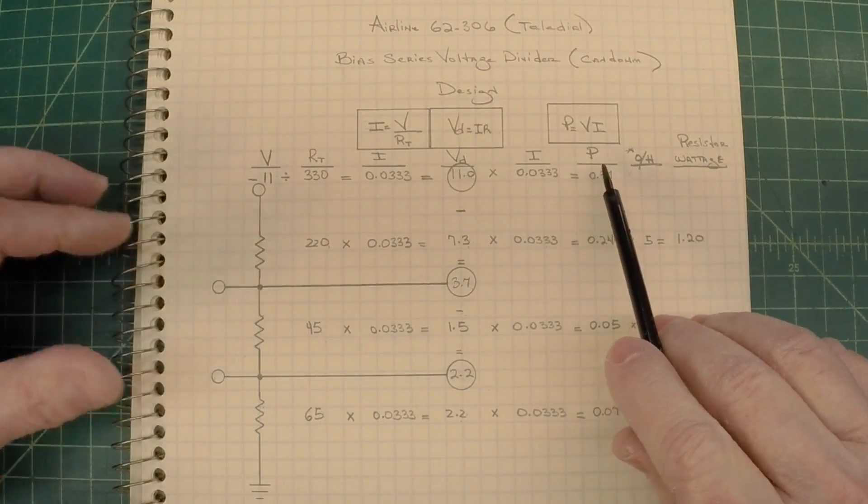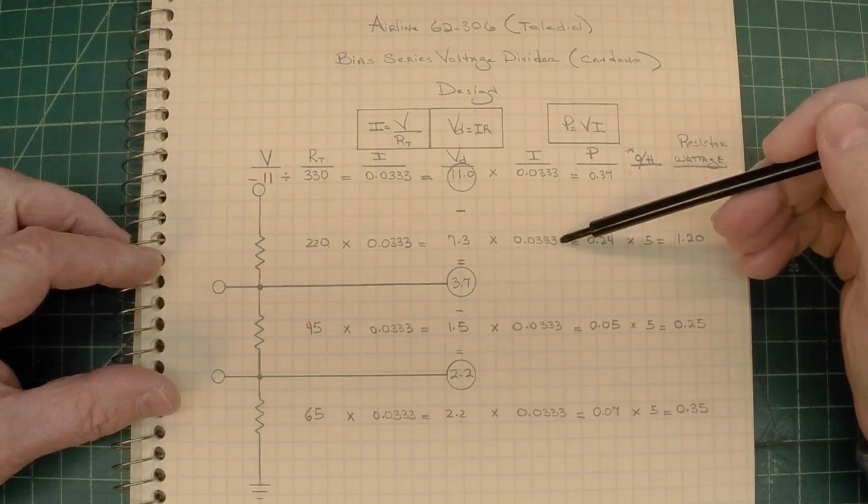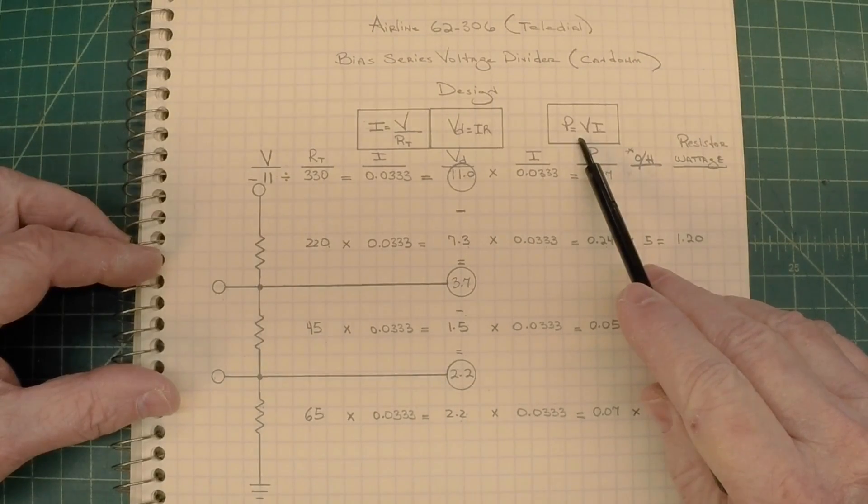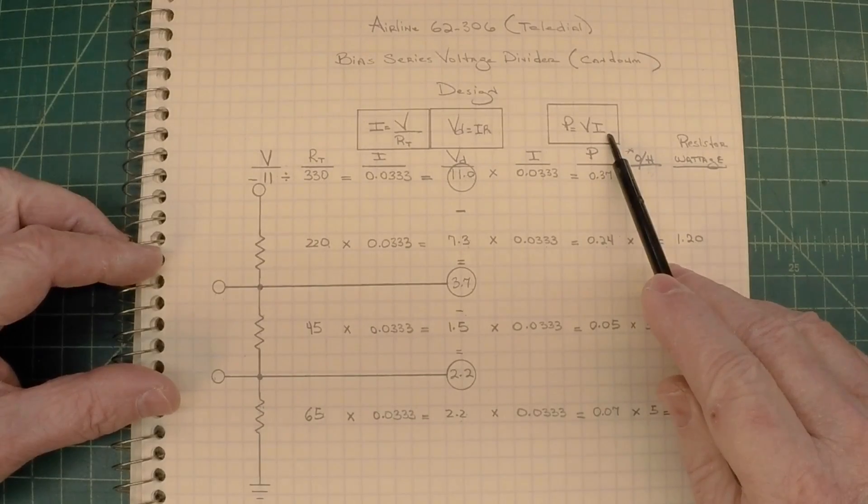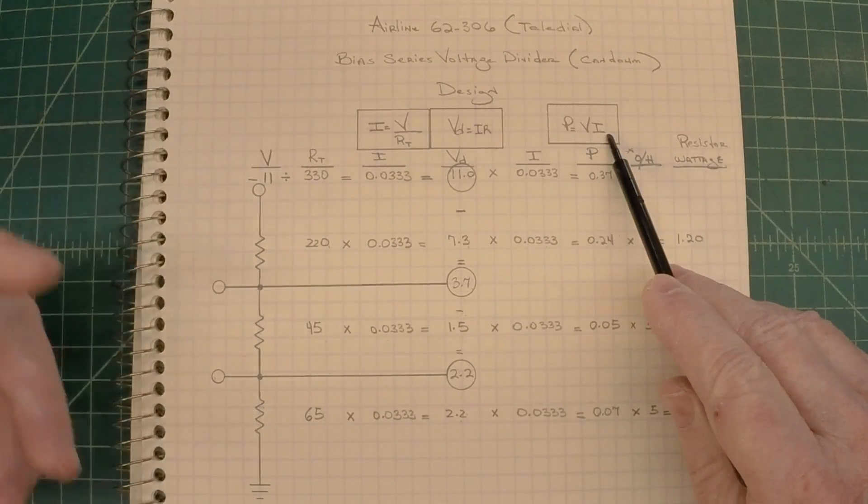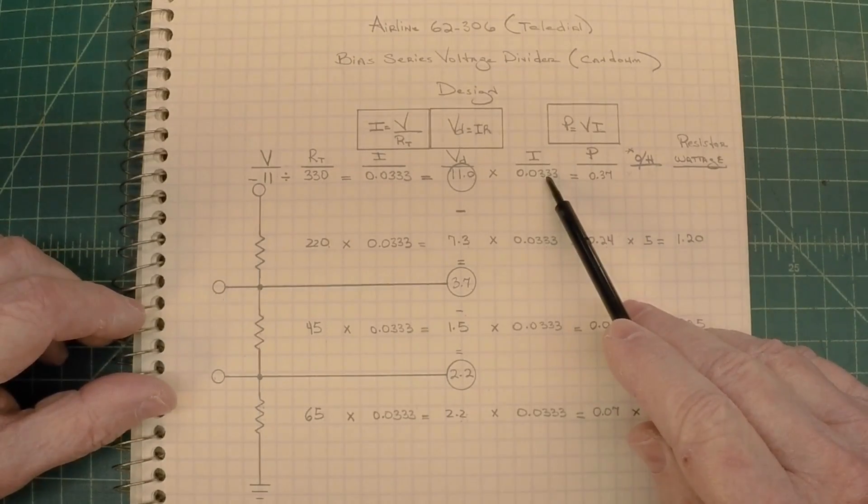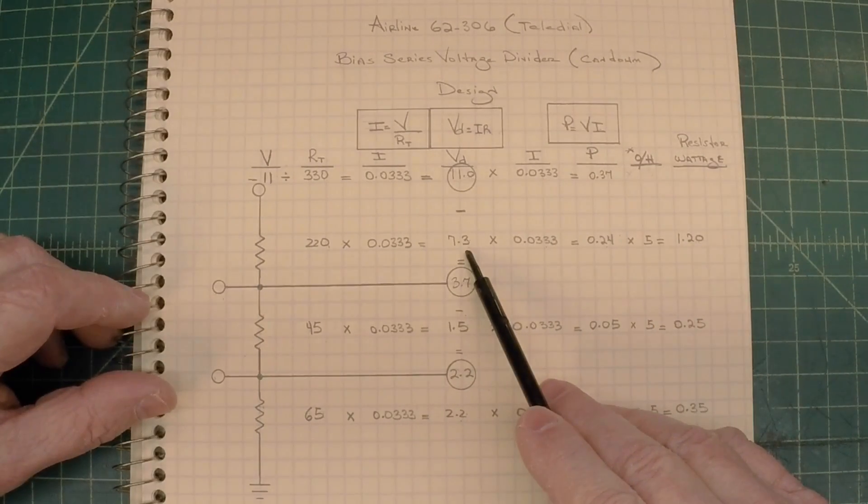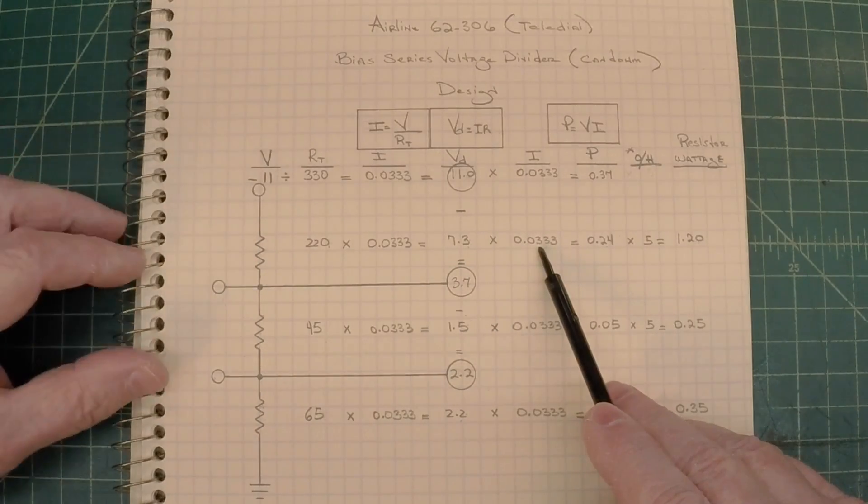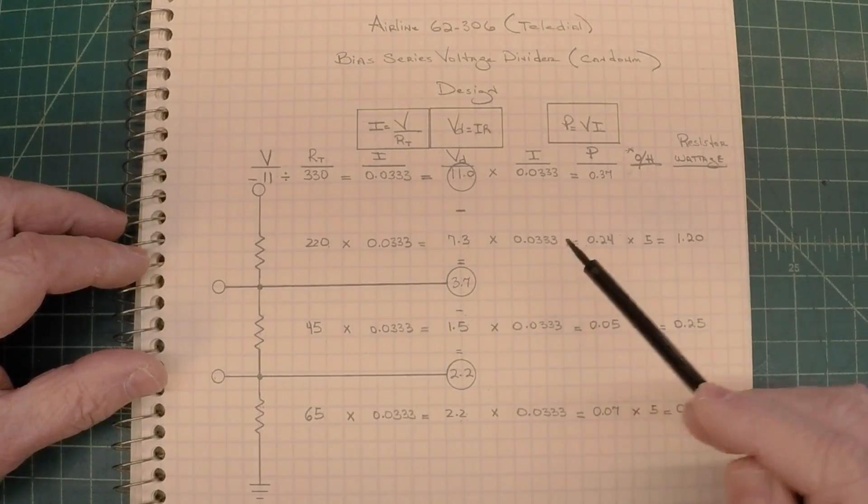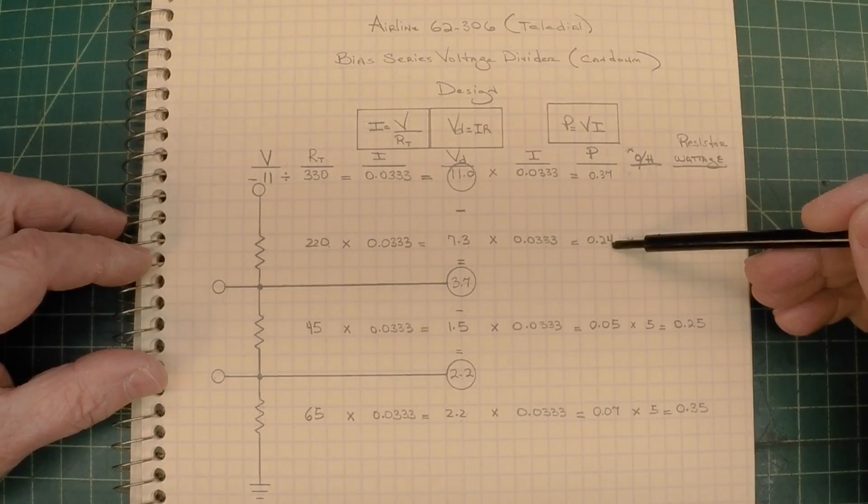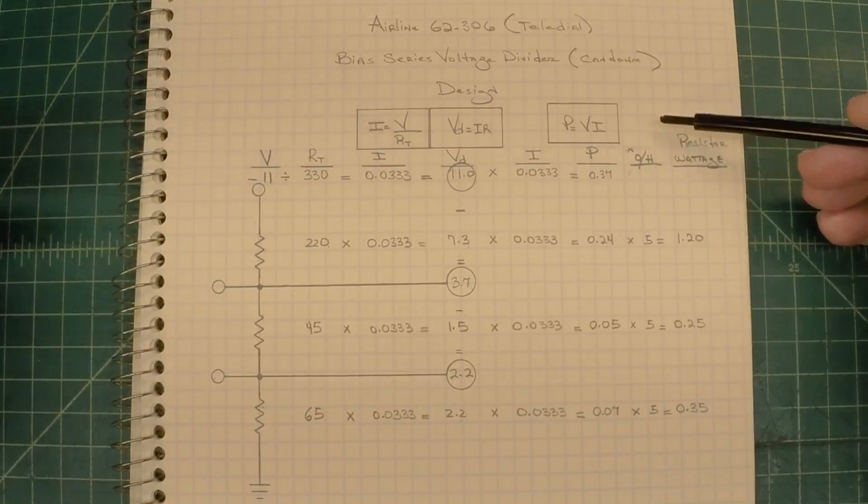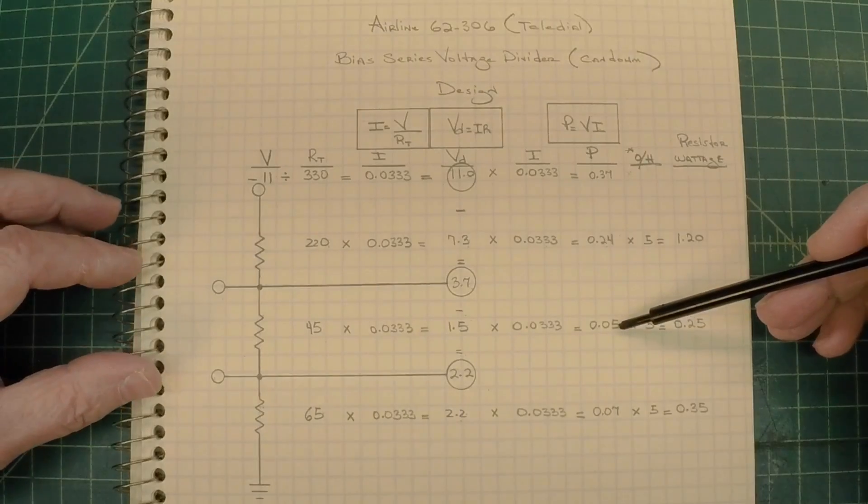Now moving over to the power requirements, that being the wattage, we'll start here in this section. So the only thing that we need to do here is apply this law. Our power will be our voltage times the current. Now we could use power equals voltage squared or times itself divided by resistance, but we already have the current called out. So this is a simple way to do it here. So you'll see that I have the voltage drop of 7.3 volts. I'm multiplying that by the known current, which is consistent for each resistor. And that gives us the power requirements of the resistor in this column, 0.24, 0.05, 0.07.